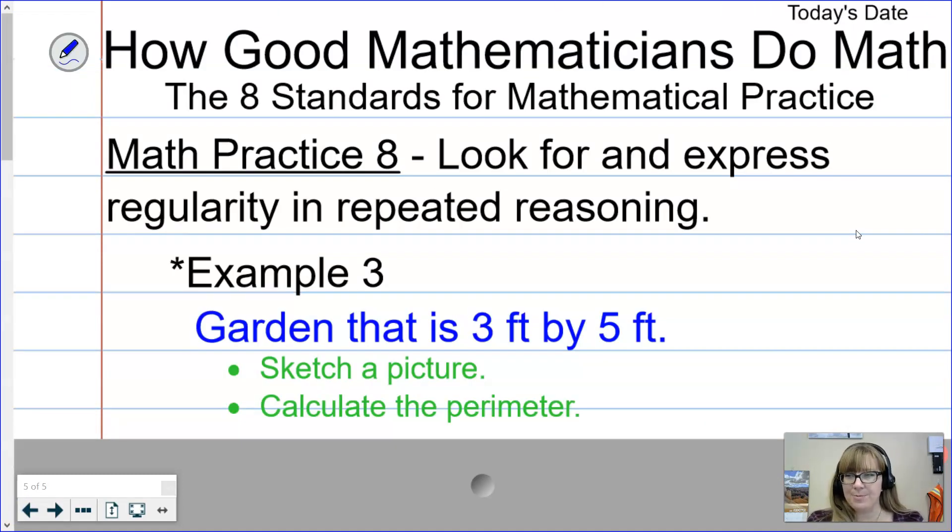Let's move on to our third and final example. Suppose we have a garden that is three feet by five feet. I want you to first start by sketching a picture, and I want us to be able to calculate the perimeter because if I have a garden I want to build a fence around it to protect it, so I need to know how much fencing I'm going to need. So draw your picture first: three feet by five feet, which means this side is also five feet and this side is also three feet. Hopefully you remember that to find the perimeter we add up all of the sides: five plus five that's ten, plus three plus three that's sixteen feet.